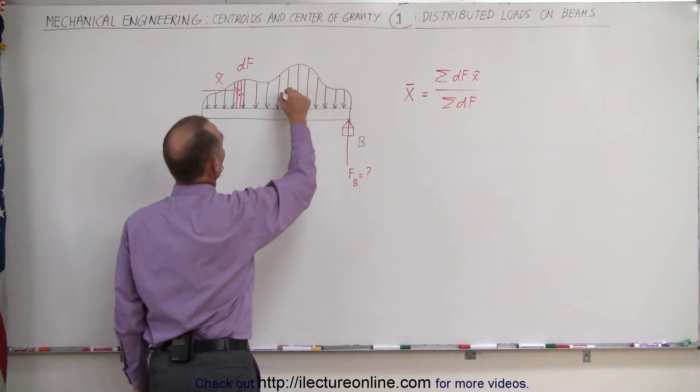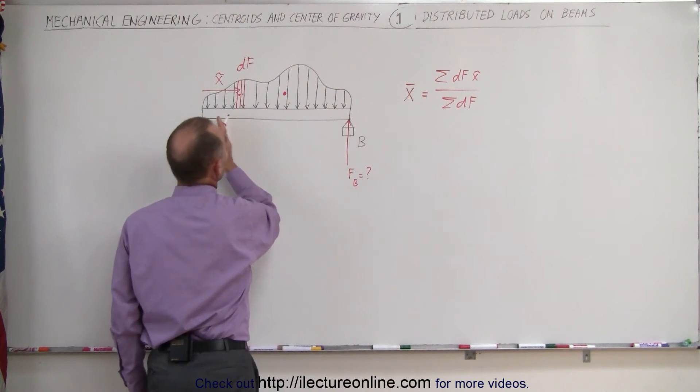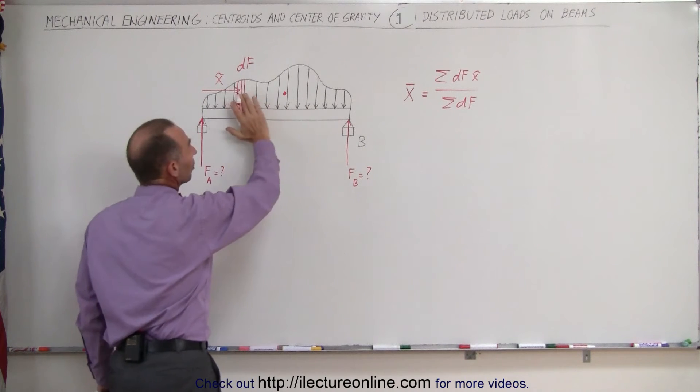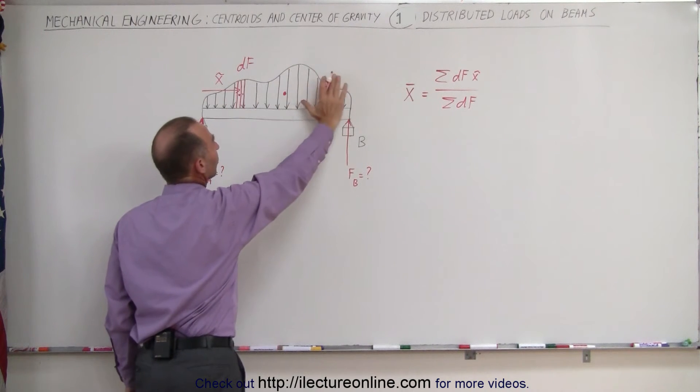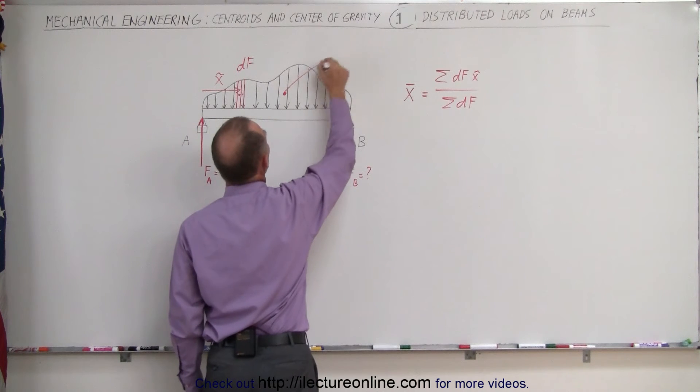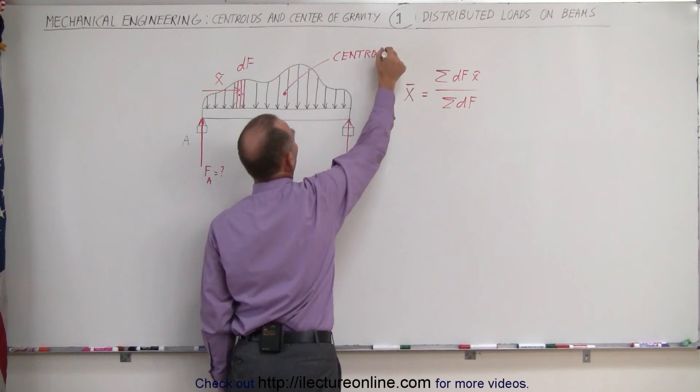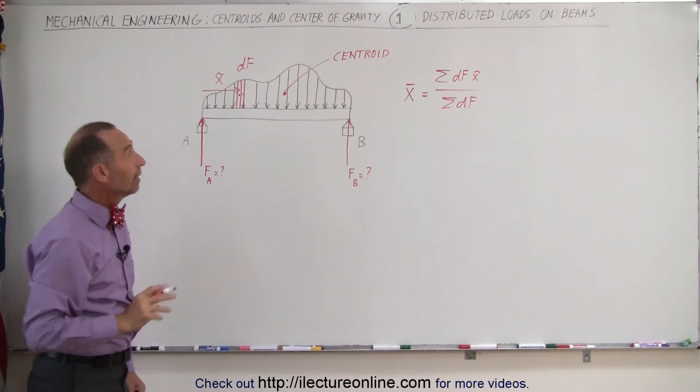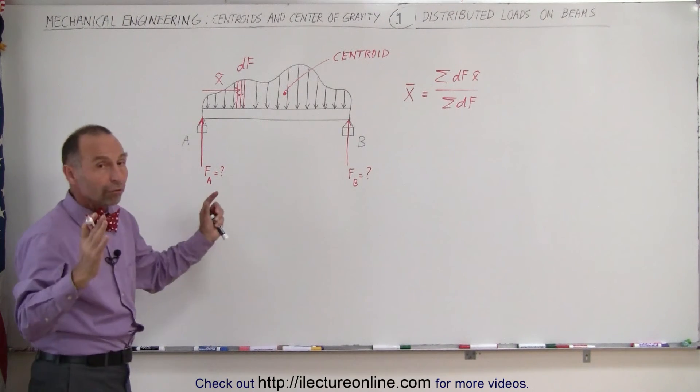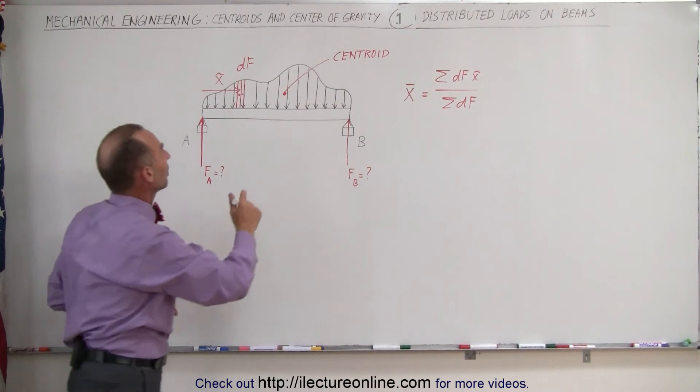Let's assume that the centroid is right about here. I would assume that it's a little bit past the halfway point because it looks like there's more force acting on the beam on the right side than on the left side. This would be the centroid of the forces. Why that is important, finding the centroid, is because at that point it acts like all the forces acting on the beam at that particular location.